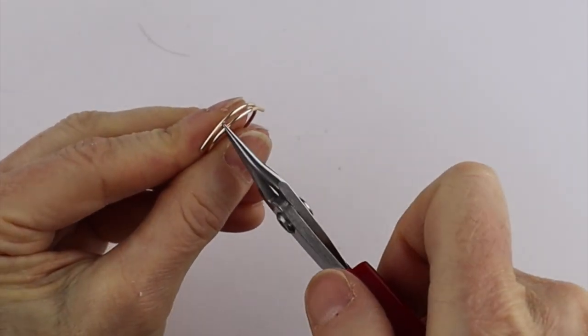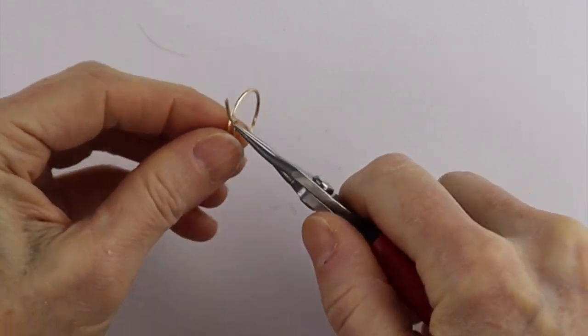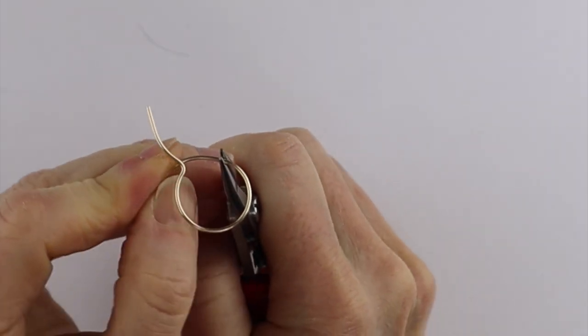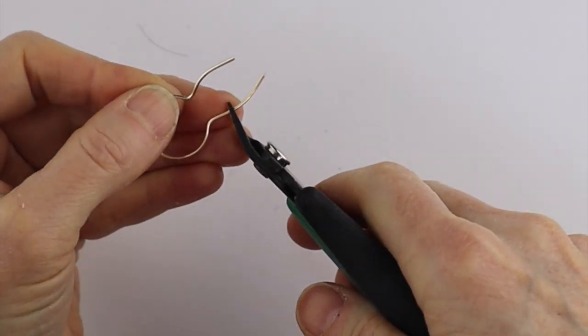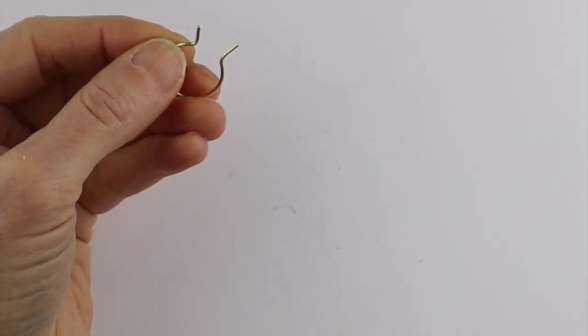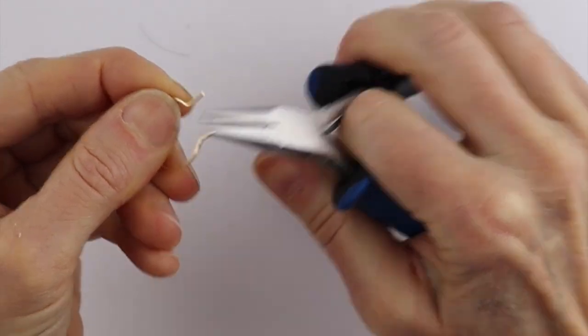We'll just take our round pliers and bend one edge up. And then the same thing over here, wherever you need the other bend, just bend it straight up. If these are too long, just give them a little bit of a trim so they don't get in the way. Then you can make sure they're pointing straight up.